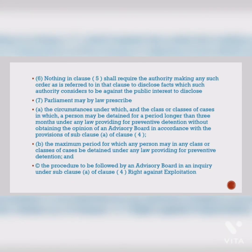The Constitution says that every person has the right to defend himself and must be informed about the ground of arrest. But the exception here is that the police can deny disclosure of facts if it is against public interest or national financial security. So the police can deny the facts — and therein lies the whole problem: the exceptions to the law.